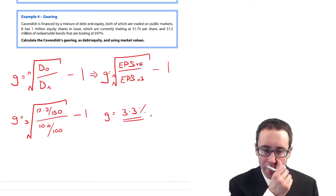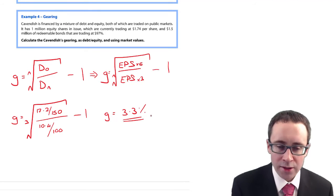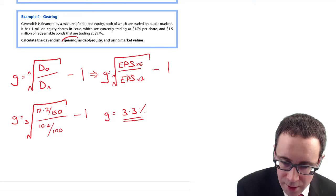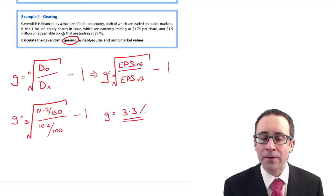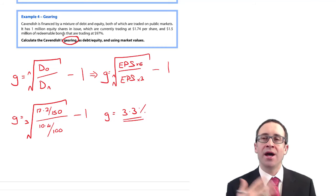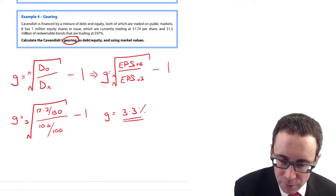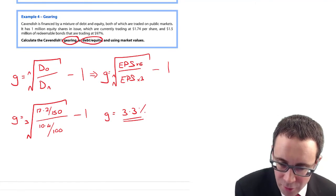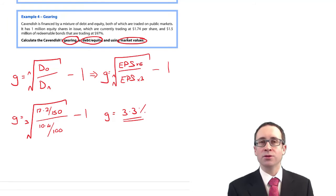The second example is looking at your gearing. Calculate Cavendish's gearing. Gearing is one of those funny ratios because it's not formally defined. Within the exam, they would have to tell you whether it is debt over equity or debt over debt plus equity.